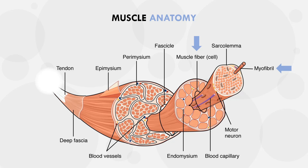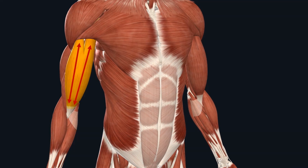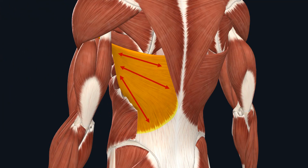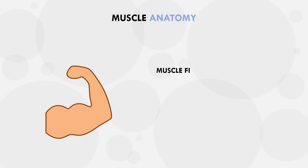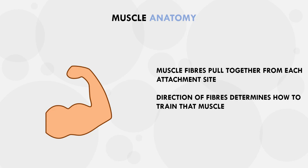In some muscles the fibres run all in the same direction, while in other muscles the fibres run in different directions. For example, a muscle like the biceps has all fibres running in essentially the same direction. However, a muscle like the lats has fibres running in all different directions. This is important to understand because the muscle fibres pull from one attachment site to the other, so the direction the fibres run determines how we train that muscle or those specific fibres.